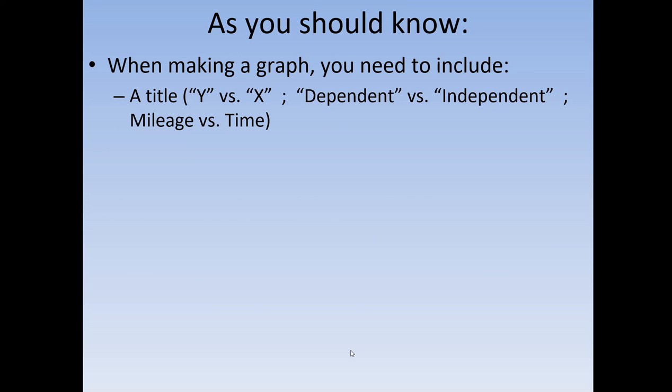And typically, the dependent is going to be on the y. Independent is going to be on the x. Now, one thing I do want to point out is that, unlike some of the other science classes, where the goal of the graph is just to see a trend, and then that's it. Like, you can look at the graph, and that's how you pull information from it.